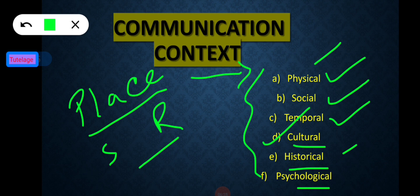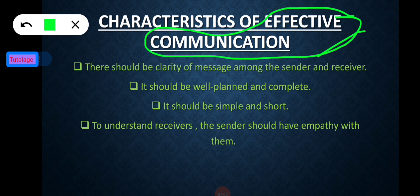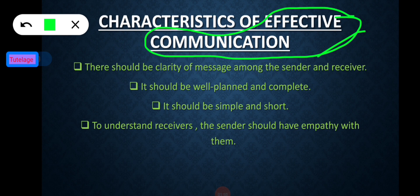Now moving to the second topic: characteristics of effective communication. Communication involves the transfer of information in the form of messages. It will be effective if both sender and receiver derive a common meaning of the message. For effective decoding and interpretation, they should have a common language so that they can comprehend the message. Communication will be effective when both sender and receiver derive a common meaning.